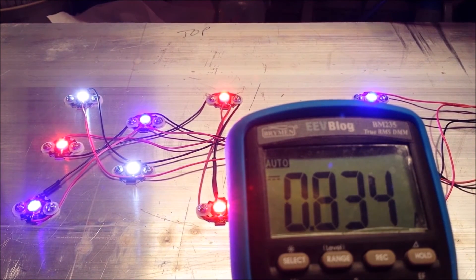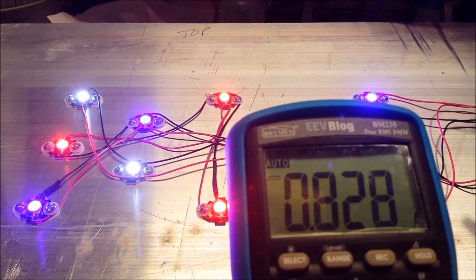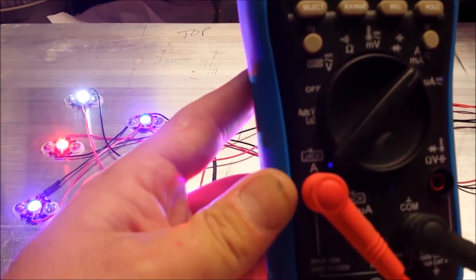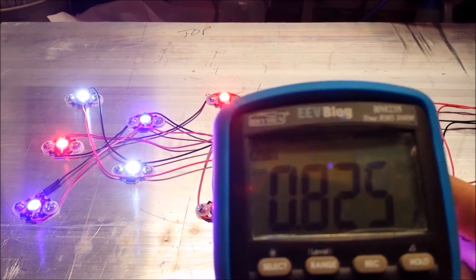As you can see, between the two of them, I'm drawing 0.83 of an amp. So this is actually on the amps jack here. So just about an amp.